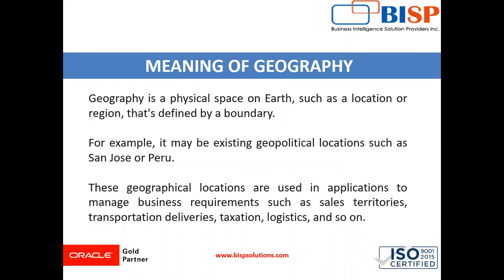Meaning of Geography: Geography is the physical space on earth such as a location or a region that's defined by a boundary. For example, it may be an existing geopolitical location such as St. Jos or Peru. These geographical locations are used in applications to manage business requirements such as sales territory, transportation deliveries, taxation, logistics, and so on.